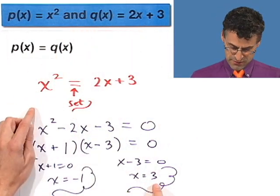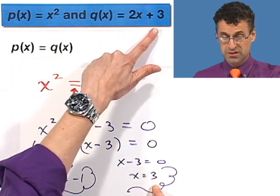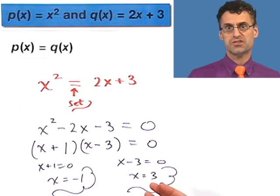And if you plug in 3, 3 squared is 9. And here 2 times 3 is 6 plus 3 is 9. So you can see it really does check.